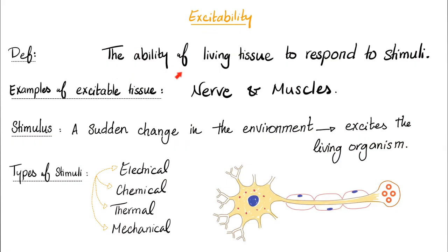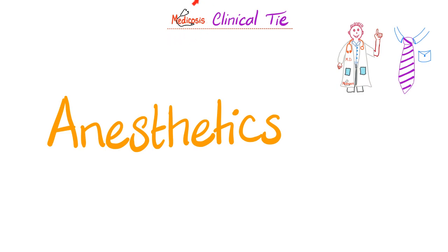Excitability is the ability of living tissue to respond to stimuli. Examples of excitable tissues: nerves and muscles. A stimulus is a sudden change in the environment that excites the living organism. Types of stimuli include electrical and others — now for a clinical tie on anesthetics.